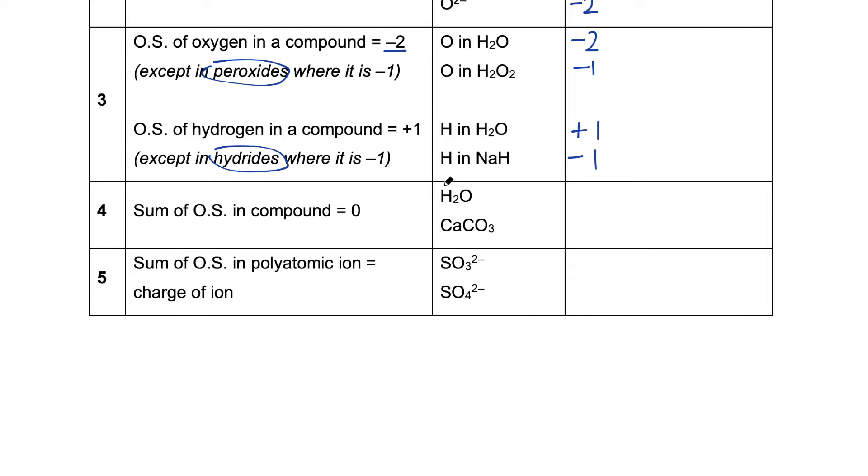We look at water as an example. It is made out of two elements. Applying the rule number three, the oxidation state of hydrogen here is plus one, and the oxidation state of oxygen is minus two. The sum of the oxidation states is equal to zero. Because there are two hydrogen atoms, we'll write it as this, two times plus one. And the oxidation state of oxygen is minus two. If we sum them up, it will be equal to zero.